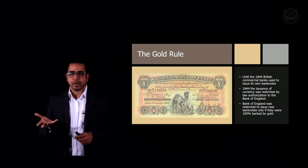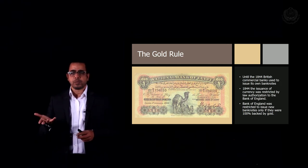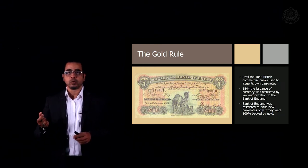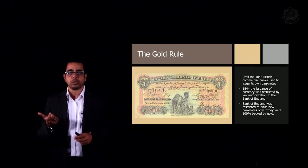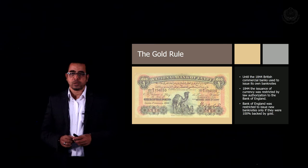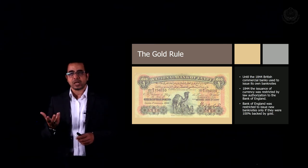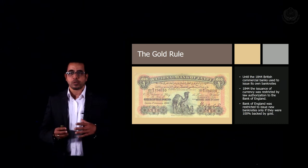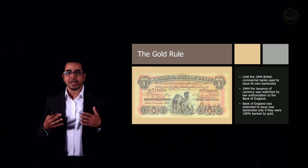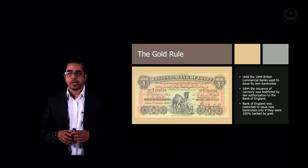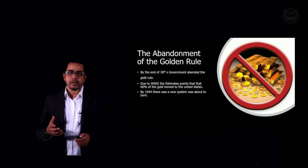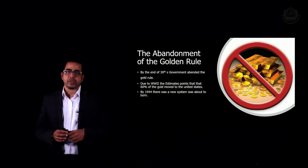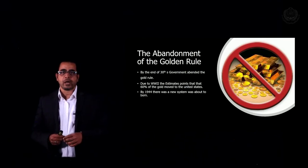When it says 'one Egyptian pound,' it doesn't mean the paper itself — it means one golden Egyptian pound. This is the essence of the gold standard, where central banks issue banknotes backed 100% by gold. This system continued until the Great Depression of 1929.